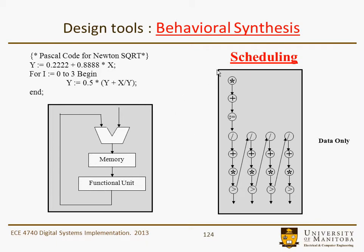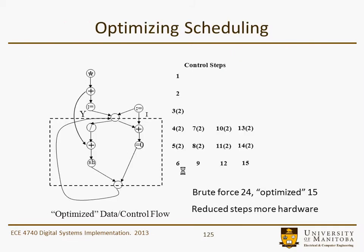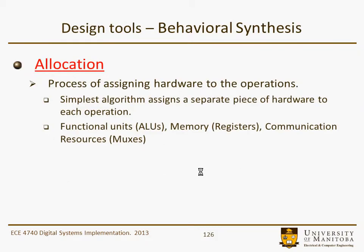Here's an example of scheduling with the data flow only shown — not the control part. If we optimize it such that we can do at least two things at once, the control steps would take 15 in this somewhat optimized fashion, as opposed to 24. For example, on step 4, two are taken; on step 3, two are taken; on step 5, two are taken; on step 6, one is taken. So basically it reduces the number of steps, but you require more hardware — and that's always the trade-off you'll encounter.